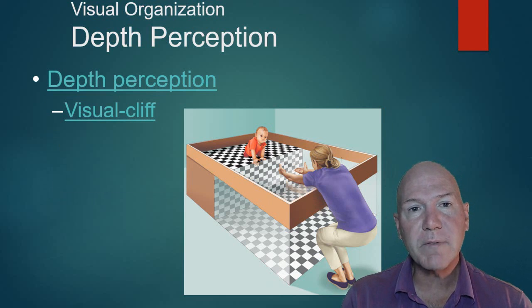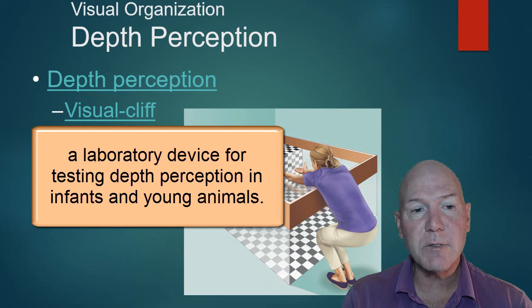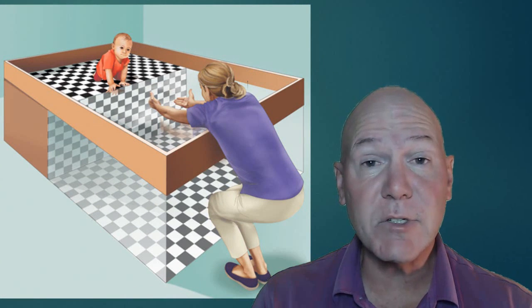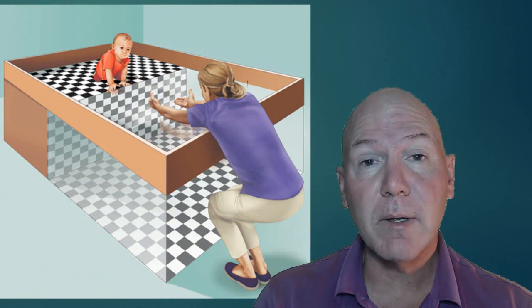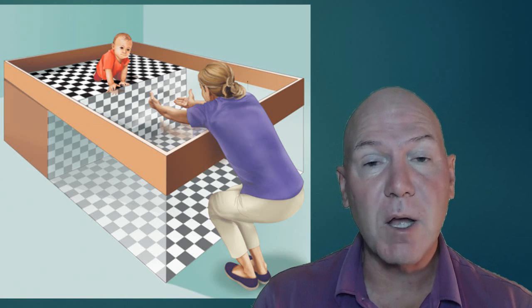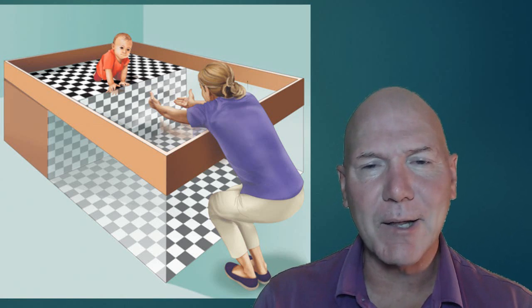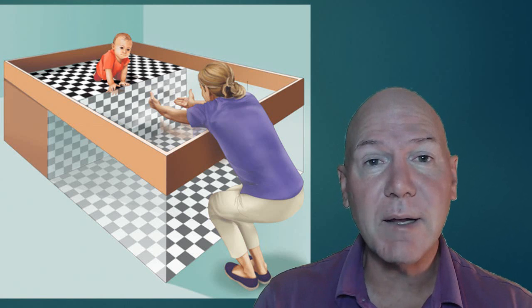Gibson and Walk developed a test called a visual cliff. If you can see in the picture here, this glass on top is made so it looks like there's nothing there, like the bottom drops off. It's a cliff, but the baby's not going to get hurt.